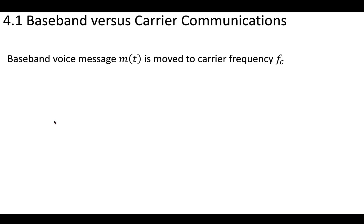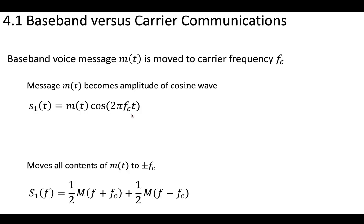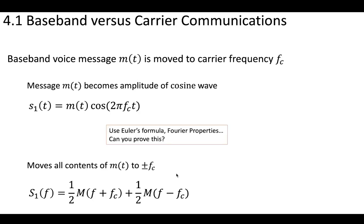So what is modulation? We'll move a baseband voice message to some carrier frequency fc. The message becomes the amplitude of some cosine wave. So we can say there's some signal s(t), and our message — my voice — is now modulating; it becomes the coefficient of this cosine wave, which is at a higher frequency fc. This moves all of the contents of this baseband voice message up to the carrier frequency fc. You can use Euler's formula, Fourier's properties, etc. to prove how this works, and we'll look at this in class later.